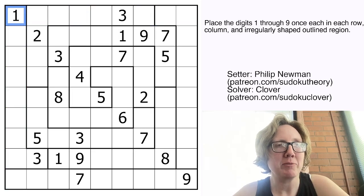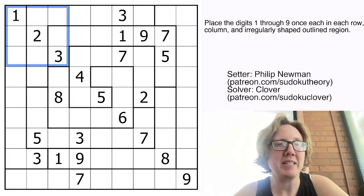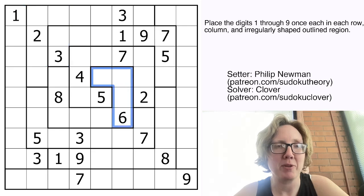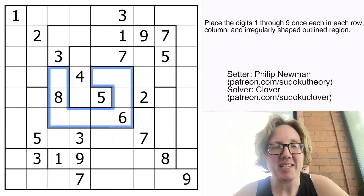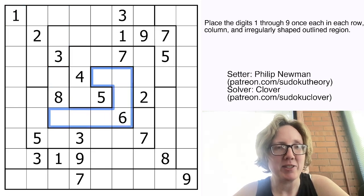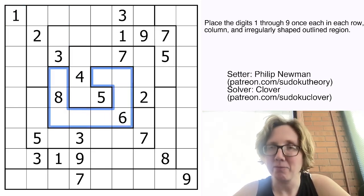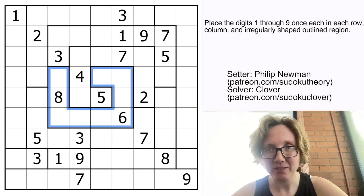But instead of having outlined three by three regions, we have irregularly shaped outlined regions. So for example, this is a region in this puzzle, and it has to contain the digits one through nine once each, just like a region in a typical Sudoku.